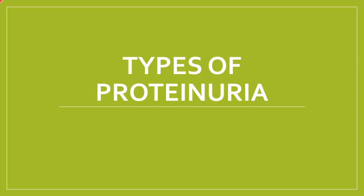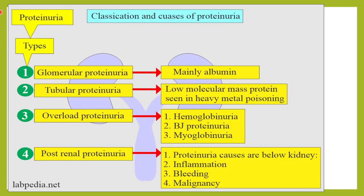Hello friends, welcome to Classes by Lab Doctor. In today's class we will see what are the different types of proteinureas which we encounter. Proteinuria happens because of any damage either in the glomerulus or the tubules, or if there is an overload of proteins in the serum, and also because of certain post-renal causes.